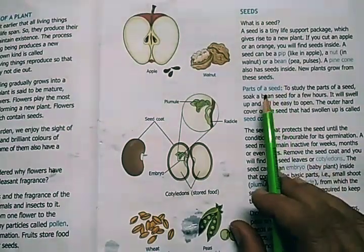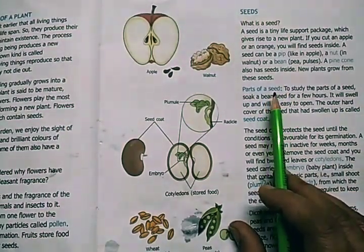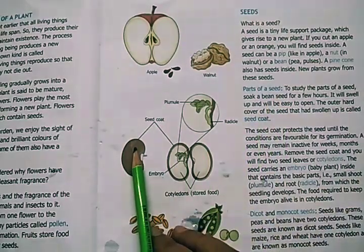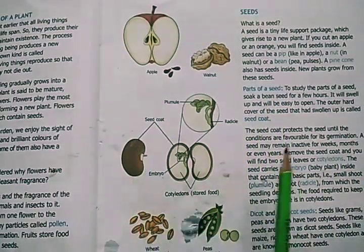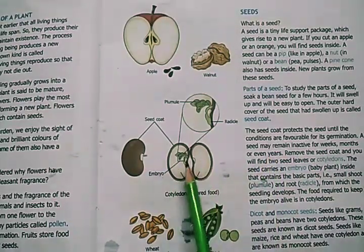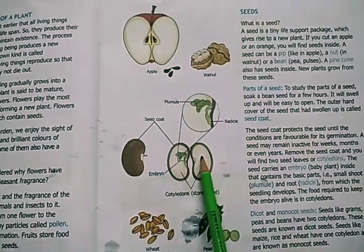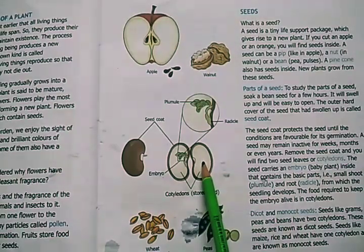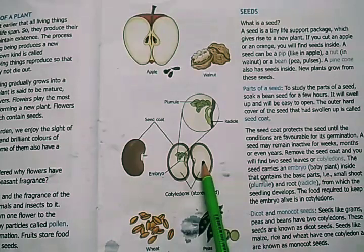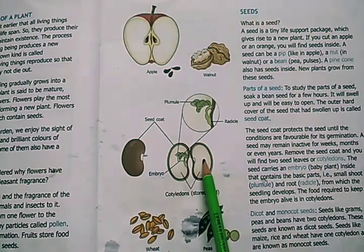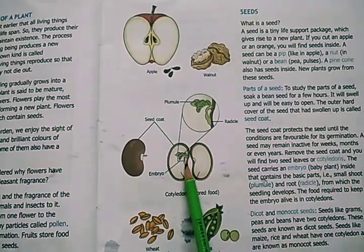Now what are the different parts of a seed? A seed consists of mainly three parts. The first is the outer hard seed coat which protects the baby plant inside. When we open the seed, two fleshy structures are found — these are seed leaves or cotyledons, which store food for the growing baby plant. When the baby plant grows big it takes up food from these cotyledons. The third and most important part is the baby plant itself, called the embryo.